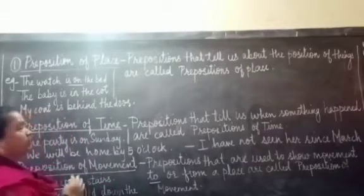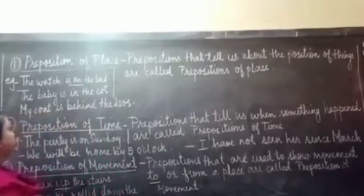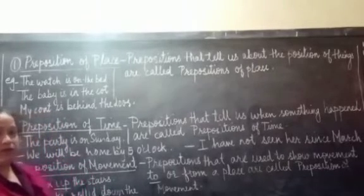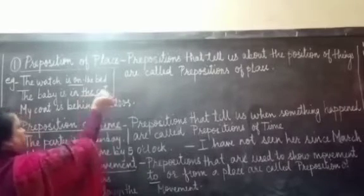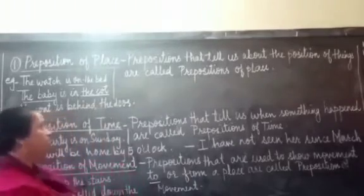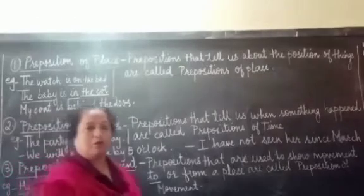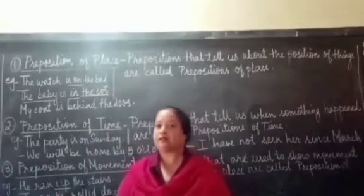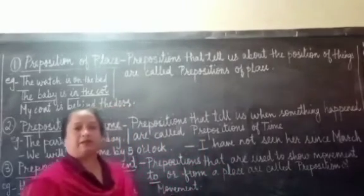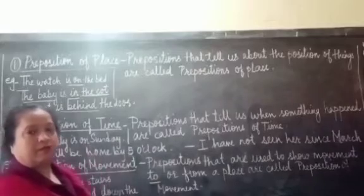The preposition 'on' tells us about the watch and where it is kept — whether it is on the bed, under the bed, or behind the bed. Next: The baby is in the cot. We want to know about the baby and where the baby is, so 'in' describes the relation between the baby and the cot — it becomes the preposition of place. Similarly, 'My coat is behind the door' — 'behind' tells us about the place where the coat is kept, so 'behind' is the preposition in this sentence.